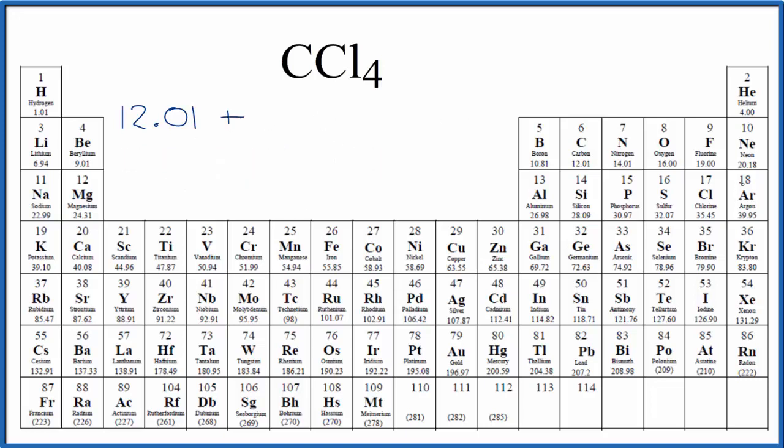Next, we're going to look at chlorine. Chlorine is right here, 35.45 grams per mole. And we have four of these chlorine atoms, so we're going to multiply that by four.